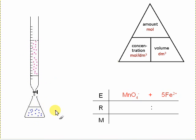To do that, it can be useful to draw up a table in which you have E for equation, R for the ratio. So in this case, these substances are in a ratio of 1 to 5. And if I use M for amount here...